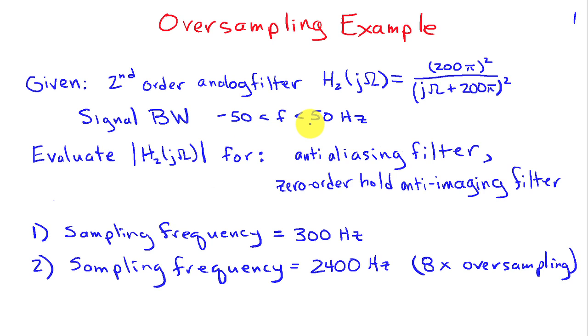We want to look at how well this filter could serve as an anti-aliasing filter and a zero-order hold anti-imaging filter if we use a sampling frequency of 300 Hz, which more than satisfies the Nyquist conditions for sampling the signal, and also if we use 8 times oversampling of this 300 Hz and sample at 2400 Hz.